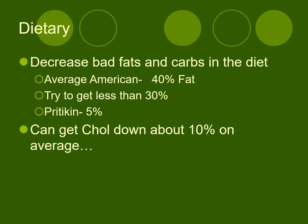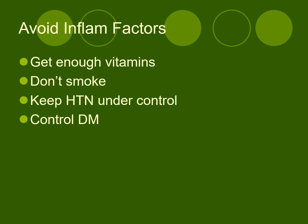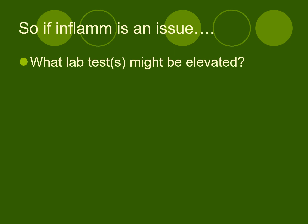We try to keep lipids under control through dietary intervention — removing bad fats and carbs. The average American eats a 40% fat diet; we try to get it down to 30%, displacing some fat with proteins more than carbs. The Pritikin diet has only 5% fat, which is unrealistic for most people. Dietary interventions can lower serum total cholesterol by about 10% on average. We also address smoking cessation, vitamin intake, hypertension control, diabetes management, and likely medication.